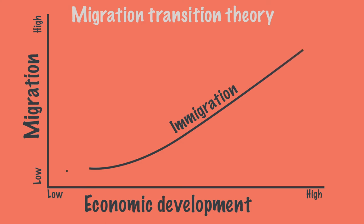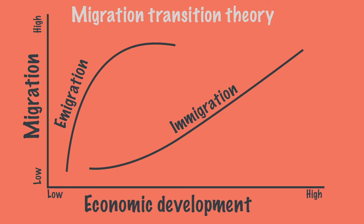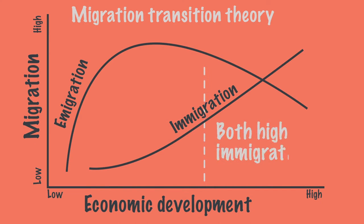However, emigration is low from the poorest countries, as there are few people who have the money to migrate. As a result, emigration will first increase during economic development — people are richer and it becomes possible to migrate. Emigration increases until the country is a middle-income country; if the country develops even further, emigration will decrease. Thus, in many countries, especially middle-income countries, there is both immigration and emigration, which the push and pull factors model cannot explain.